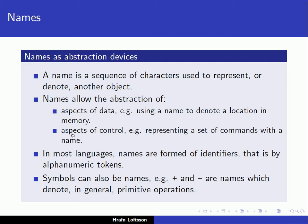Names also allow the abstraction of aspects of control. For example, when we give a name to a function, we're really representing a set of commands which are programmed in the body of the function with a name. So we have what is called data abstraction and control abstraction.